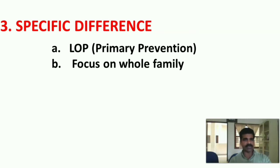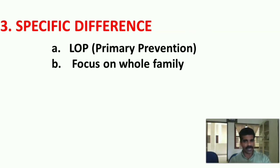Community health nursing has an application of levels of prevention — primary and primordial prevention — and it focuses the whole family to render preventive, promotive, curative, restorative, and rehabilitative services.